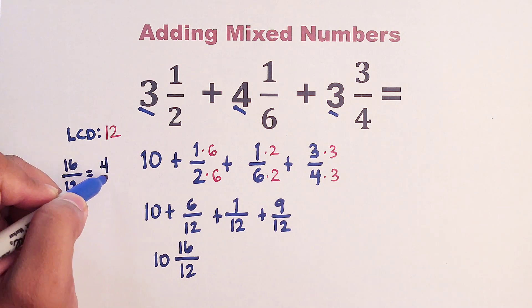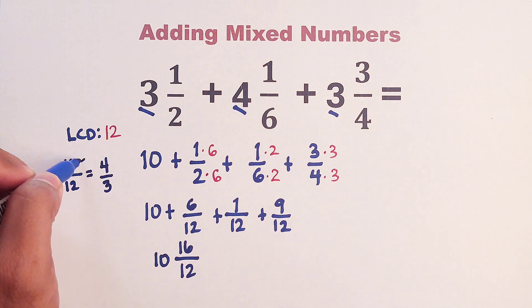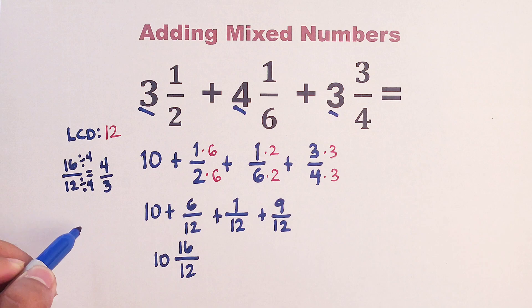what? 4 over 3. Because this 16 can be divided by 4. And this 12 can be divided by 4. This is 16 divided by 4, which is 4. 12 divided by 4, which is equal to 3.